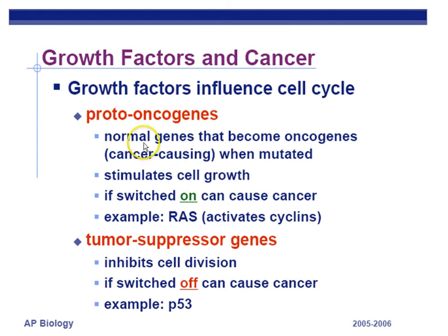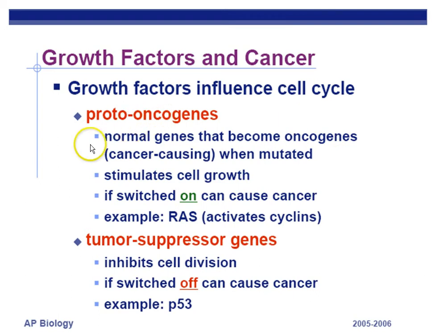Growth factors and cancer. Proto-oncogenes are normal genes, but when they're mutated, they can become oncogenes and cause problems. Mutations in genes that make proteins are essentially what cancer is all about — the proteins that control cell division are no longer doing their job. Cancer is like a runaway train where the cell just divides and divides and divides.